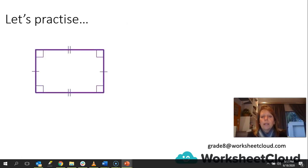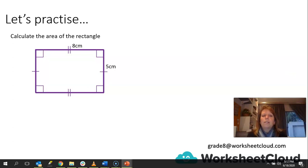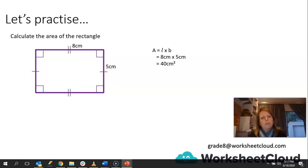Here we have a rectangle. We need to calculate its area when we are given the sides 8 cm and 5 cm. L times B would be 8 cm times 5 cm, which gives us 40 cm squared. Remember, cm times cm gives you cm squared.